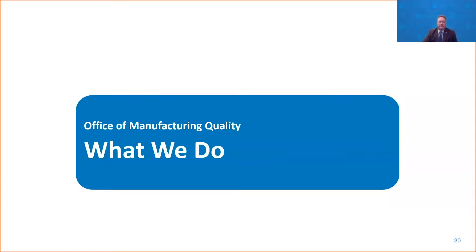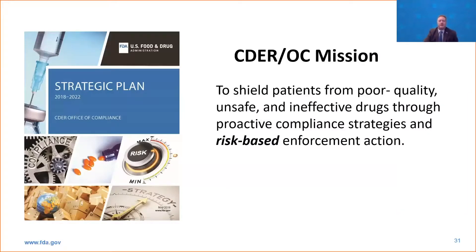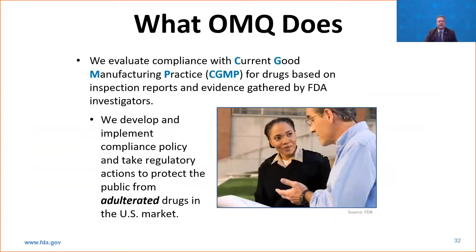OMQ, the Office of Manufacturing Quality — what do we do? We are in the Center for Drug Evaluation and Research, one of the arms of FDA, specifically in the Office of Compliance. Our mission statement is that we are here to shield patients from poor quality, unsafe, or ineffective drugs through compliance strategies and risk-based enforcement actions. We are the Manufacturing Compliance Office, primarily dealing with compliance with current good manufacturing practice, also known as CGMP for drugs. Most of our actions are based on FDA inspection reports and evidence gathered by FDA investigators, and we take regulatory actions and implement policy to protect the public from adulterated drugs.